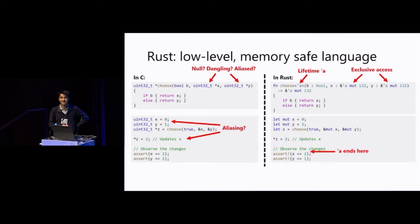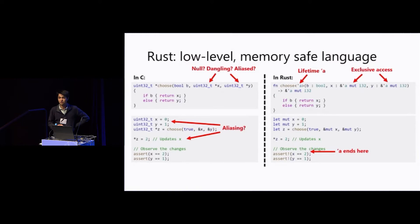An important point is that this type system was designed initially for memory safety, but it actually provides much more. In a sense, you don't have aliasing in a safe Rust program: z does alias x, but the key point is you can't use x and z at the same time. For as long as z is valid you don't have access to x and y, and once you retrieve access to x and y, z is invalid.